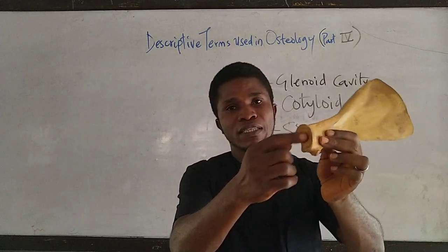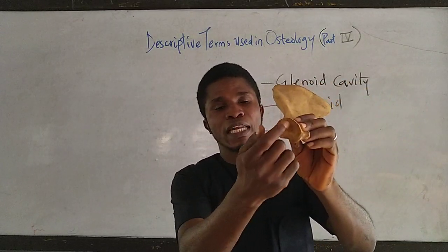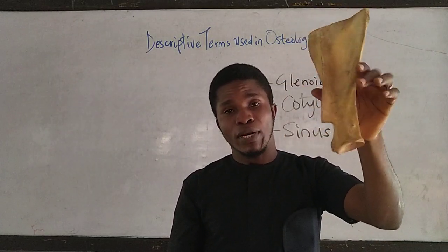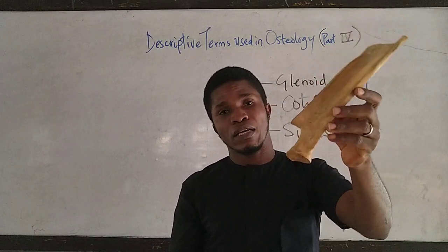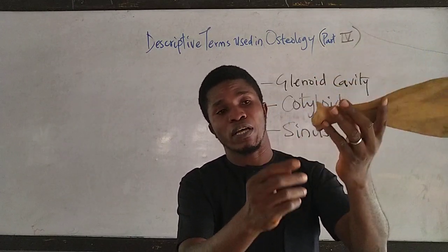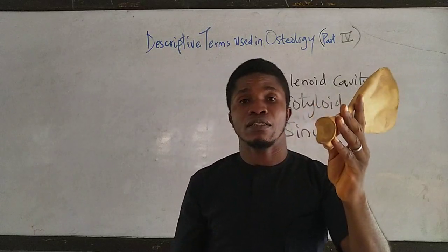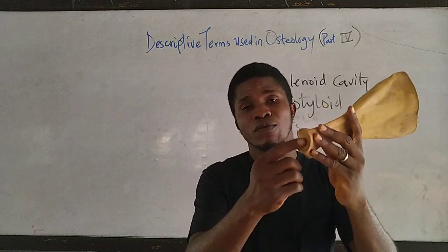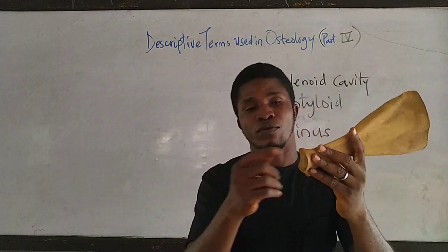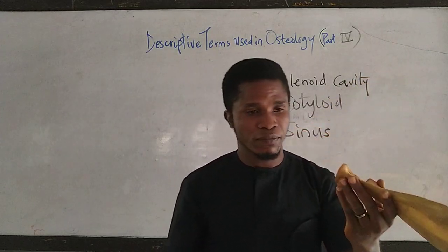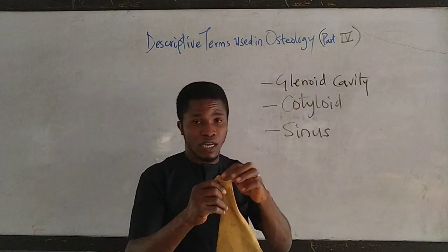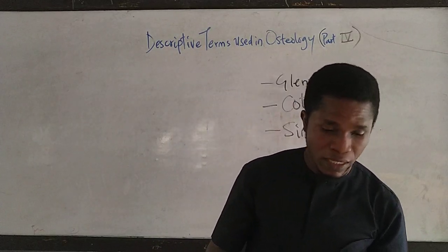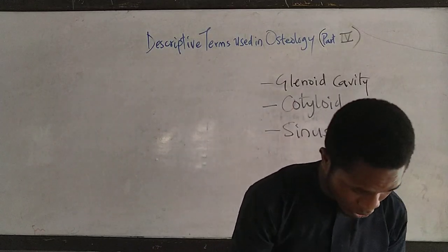This is the glenoid cavity. This bone as a whole is the pectoral girdle. It has a scapula, and then on the ventral angle of this scapula you have the glenoid cavity. This is actually for attachment with the head of the humerus. So this is a glenoid cavity — it is also referred to as a cup-shaped cavity.